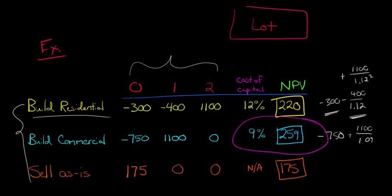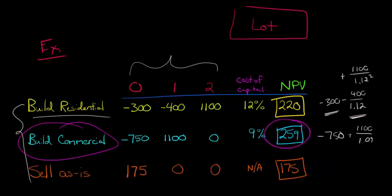Forget about anything else that's going on, and just look at the net present value, because that's telling you that this project, the Build Commercial project, has the highest NPV at $259. That means that Building Commercial is going to add the most wealth to our firm.